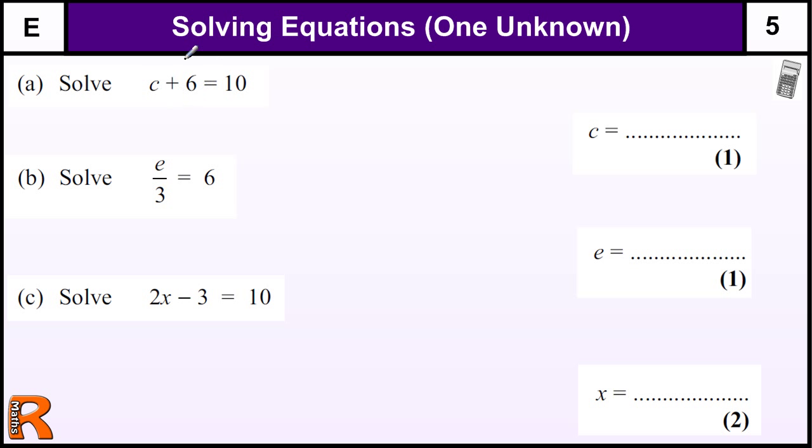And this first one really is just a missing number question: what plus 6 is 10? And that's 4, so c would be 4 because 4 plus 6 is 10.